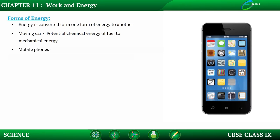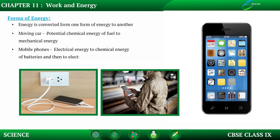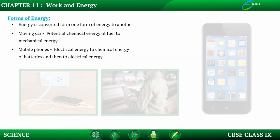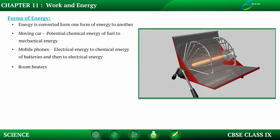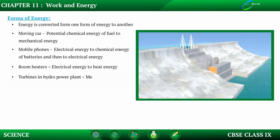Like in mobile phones, there are two or three ways of changing energy. First, we are using electrical energy to charge the batteries, so batteries are having chemical energy. So electrical energy is converted into chemical energy, and then we are using that chemical energy back in the form of electrical energy to operate the mobile phone. In the room heater, electrical energy is converted to heat energy. In turbine hydropower plants, mechanical energy is converted into electrical energy.